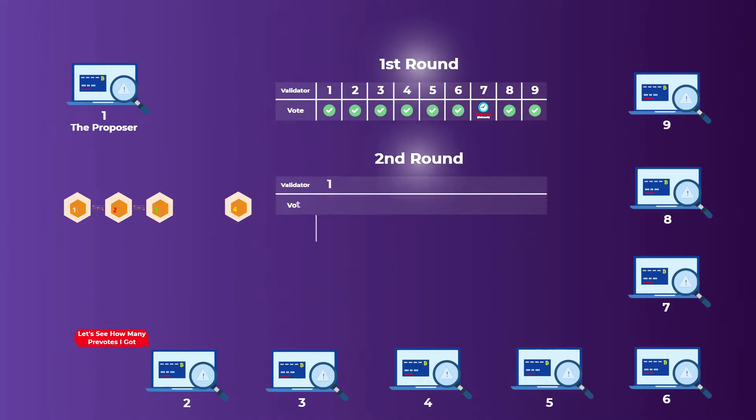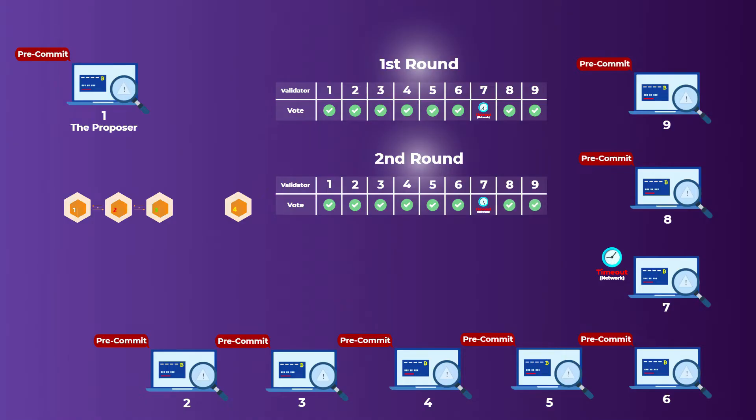In the second round, each validator has to wait and see what other validators say. If a validator receives provote messages from more than two-thirds of the other validators, it needs to send a pre-commit message. In our example here, we have 9 validators, so two-thirds of them equals 6. When a validator receives a provote from 7 validators or more, it can send a pre-commit. But if a validator didn't receive provotes from 7 validators or more during the time allowed, it needs to send pre-commit nil. Now all the validators need to do the same. When this current block has pre-commit messages from 7 or more validators, it gets accepted and added to the blockchain.